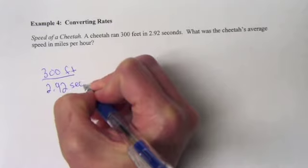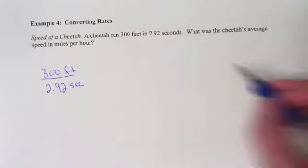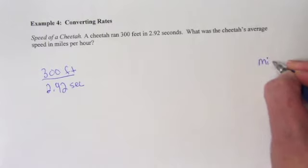So let's write down that rate. We have 300 feet for every 2.92 seconds. Now we need to keep in mind where we want to get to. It says, what is the cheetah's average speed in miles per hour? So somewhere at the end, we want to end up in miles per hour. We have to get to that.